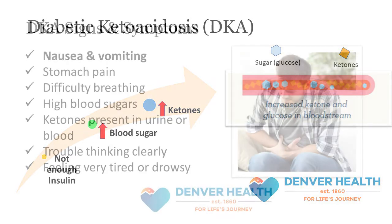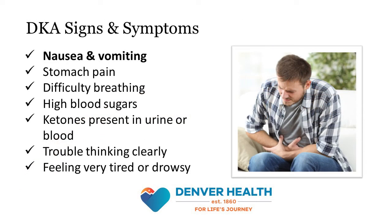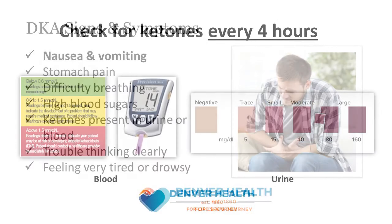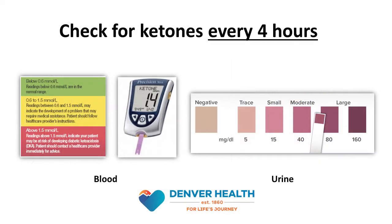If unrecognized, DKA can lead to severe dehydration, changes in electrolytes, nausea and vomiting, abdominal pain, trouble thinking clearly, and difficulty breathing. If you're at risk for developing DKA, you should also check for ketones every 4 hours in addition to frequent blood sugar monitoring. This can be done at home with either a blood ketone meter or urine ketone strips.